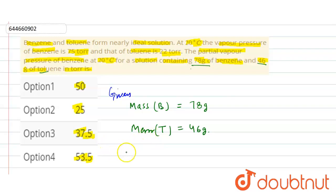So number of moles of benzene is mass of benzene, which is 78, divided by molar mass of benzene. So molar mass of benzene is 78. So after calculations, we get number of moles of benzene is 1.